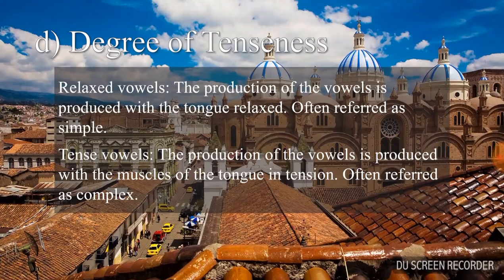Degree of tenseness. Relaxed vowels: the production of the vowels is produced with the tongue relaxed. They are also known as simple vowels. Tense vowels: the production of the vowels is pronounced with the muscles of the tongue in tension. They are also known as complex vowels.